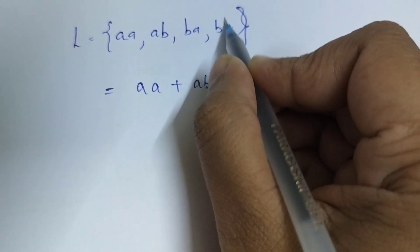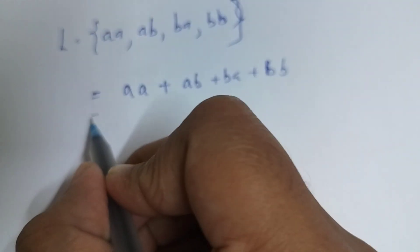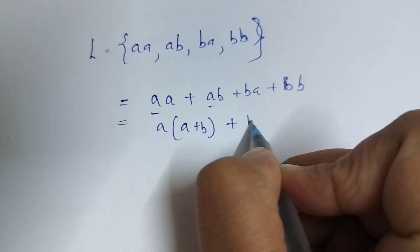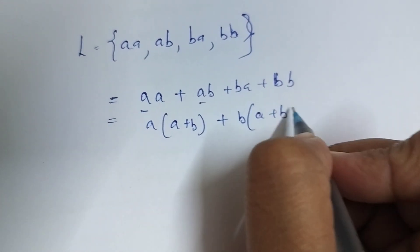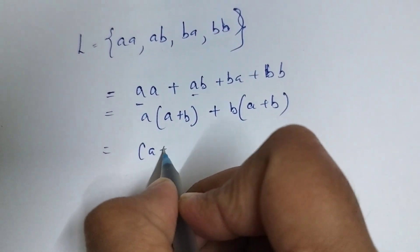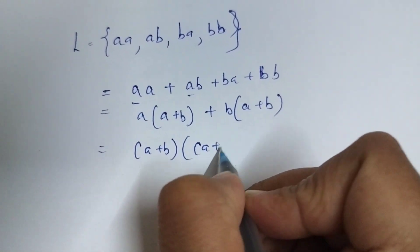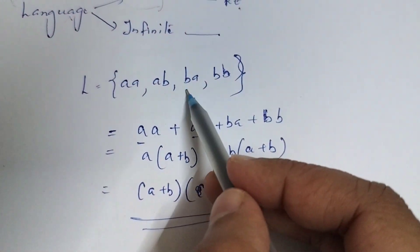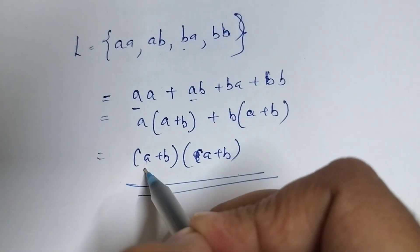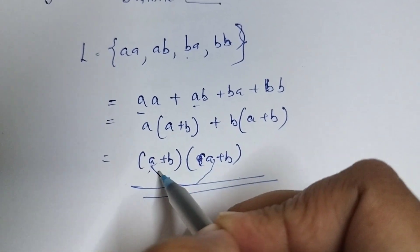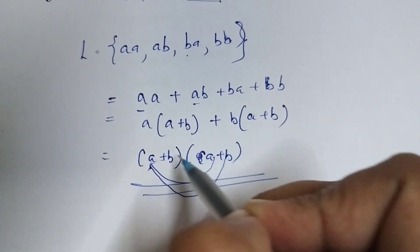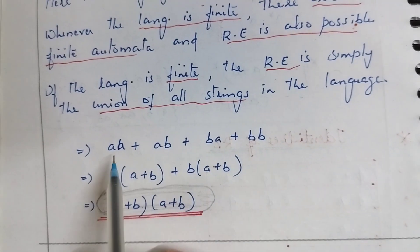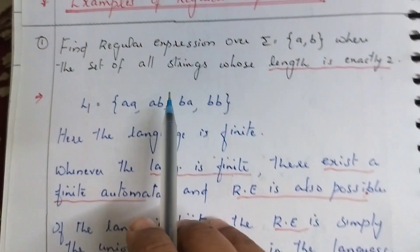So for L1 — which contains aa, ab, ba, bb — we take a as common: a(a+b), then taking b outside gives b(a+b). If we then take (a+b) as common, we can write (a+b)(a+b). Just to check: aa, ab, ba, and bb — we can generate all four. This is the regular expression corresponding to this particular problem.